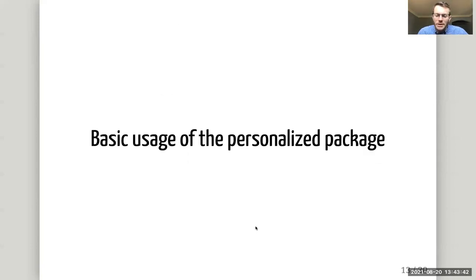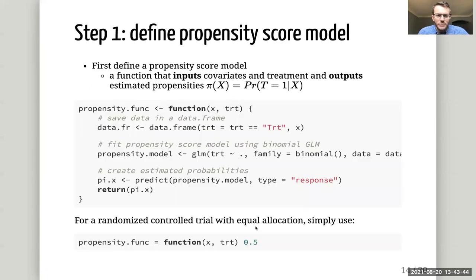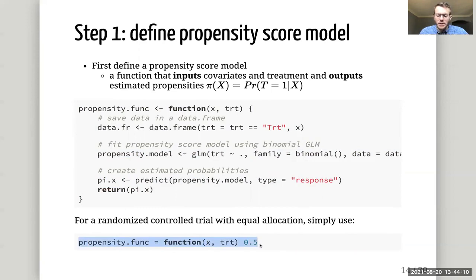Now I'll go into the basic usage of the personalized package. Step one is always defining our propensity score model — we need to define a function in R which inputs our covariates and treatment vector and outputs the estimated propensities. In the case of a logistic model for the propensity score, that would look like the following. If you have a randomized controlled trial, you can just define a function that returns a constant of one-half.